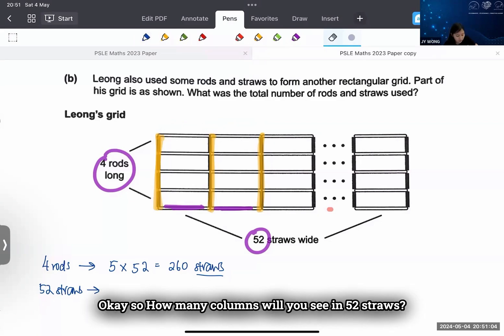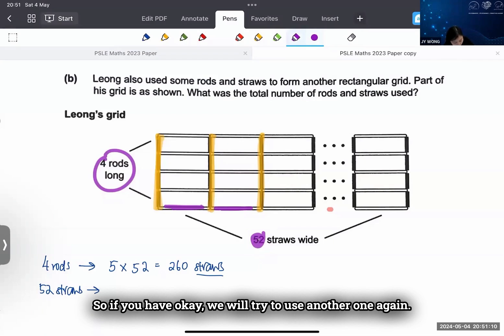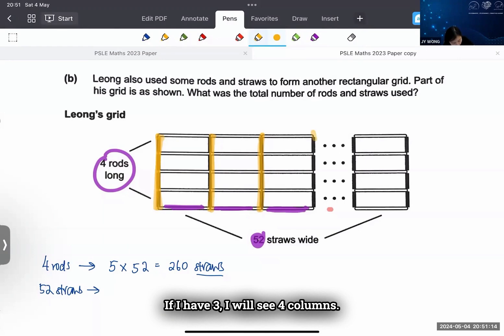Okay, so how many columns will you see in 52 straws? We will try to use another one again. If I have 3 straws, I will see 4 columns of rods. So if I have 4 straws, I will see 5 columns.